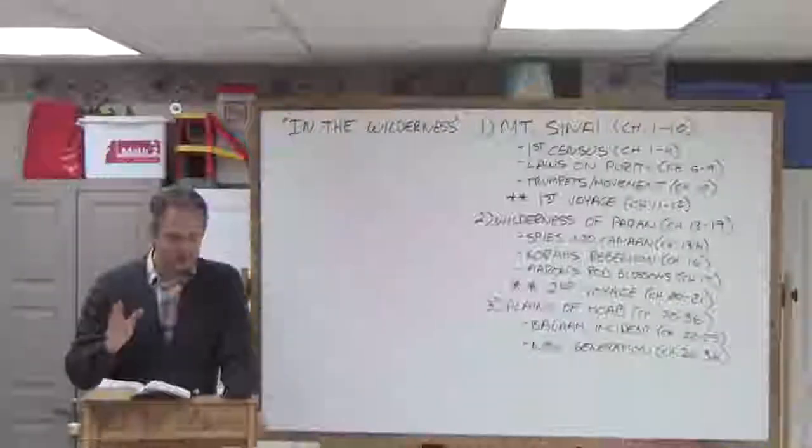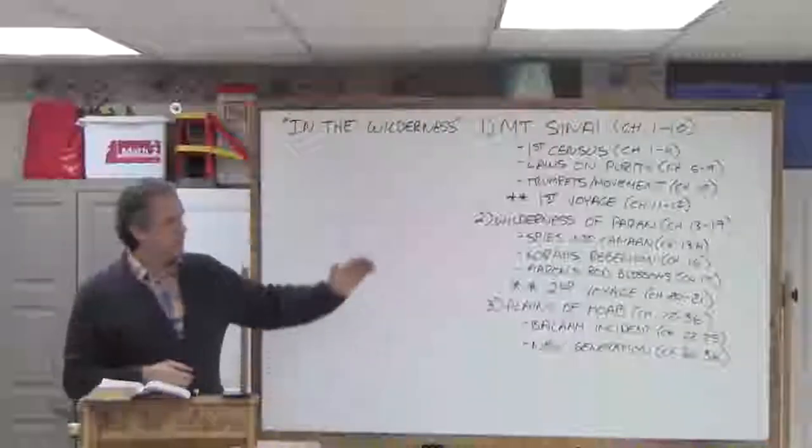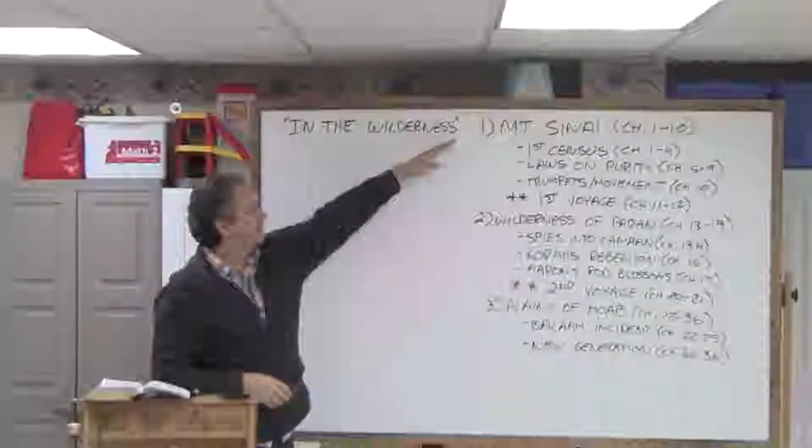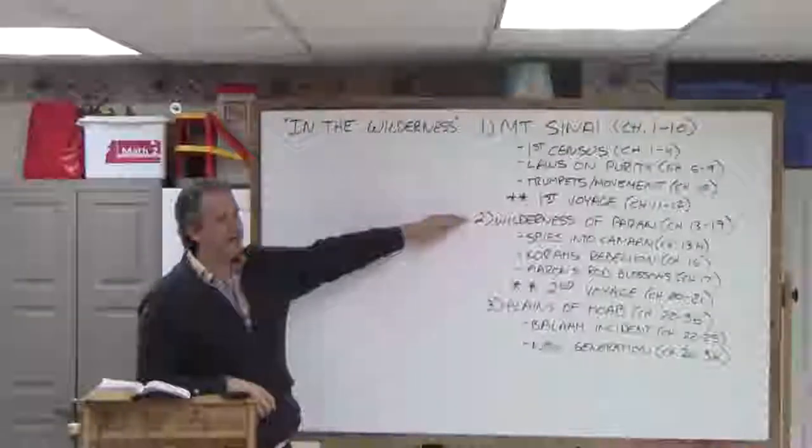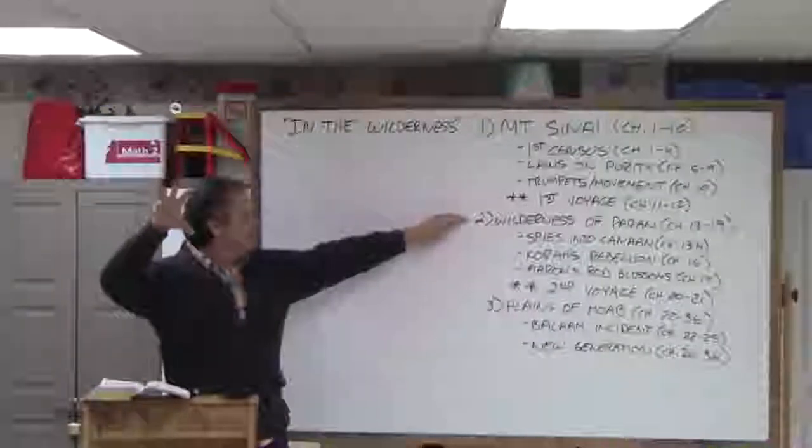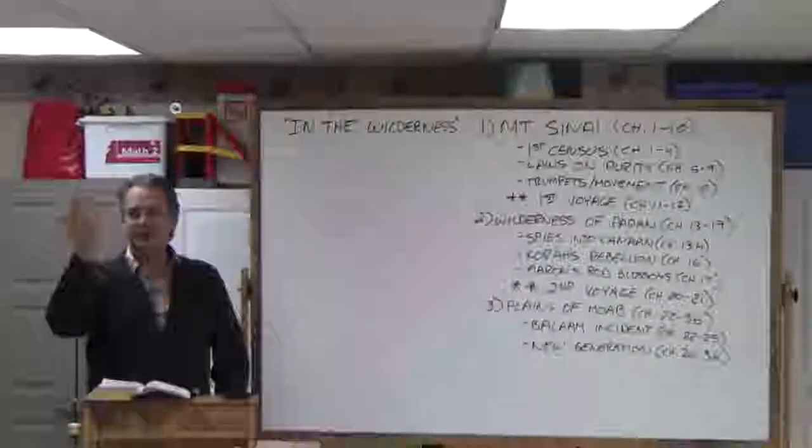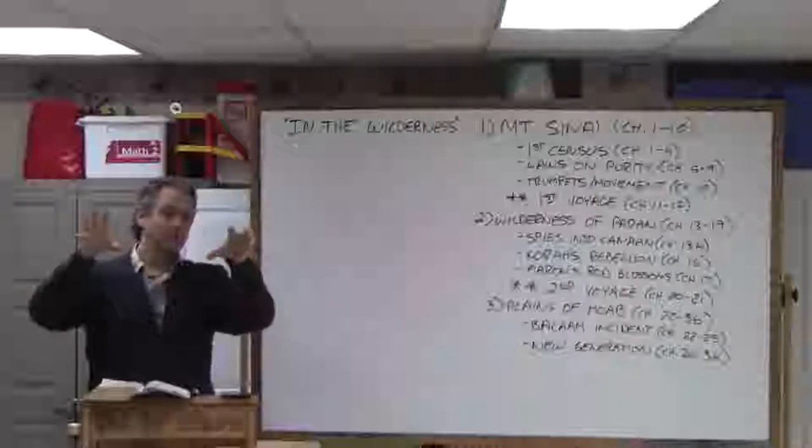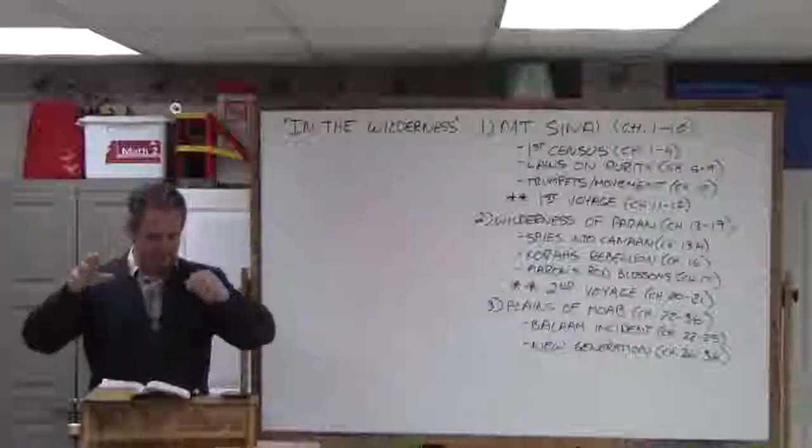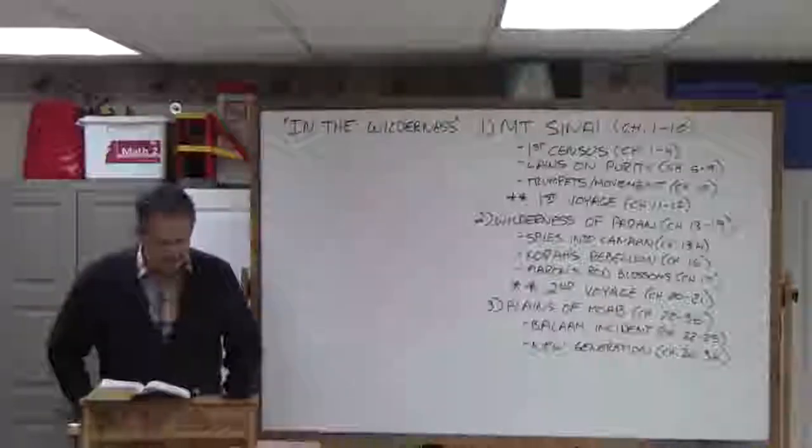The book, the easiest way to break it up, I think, is into three parts. They start at Mount Sinai, then they travel. They end up at the wilderness of Paran, which is about halfway to their destination to Canaan. Then they travel again, and they end up at the plains of Moab on the east side of the Jordan. So we'll do the first section, chapters 1 through 10, Mount Sinai.